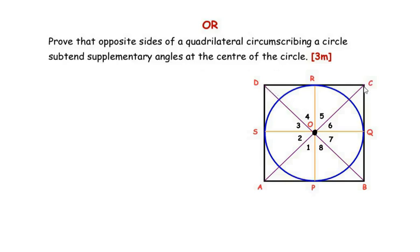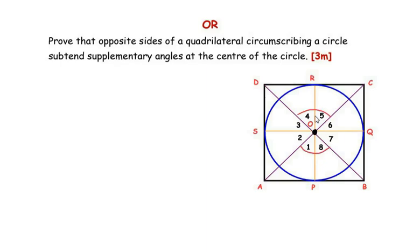For example, taking opposite sides CD and AB, the angle made by CD at center O added to the angle made by AB at center O should give 180 degrees. Similarly, the angle made by side BC at center O, when added to the angle made by opposite side AD at center O, should also give 180 degrees.